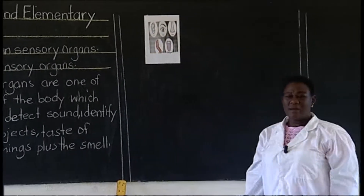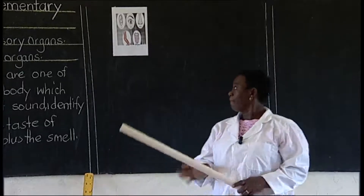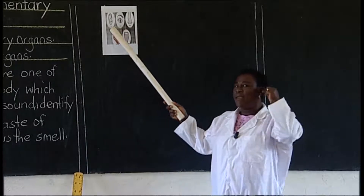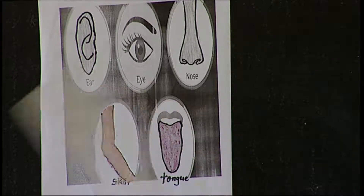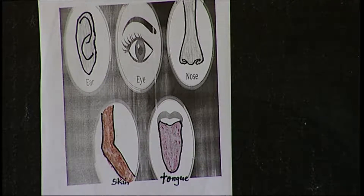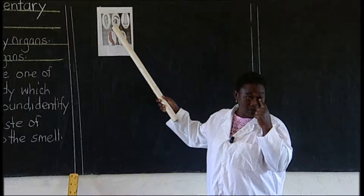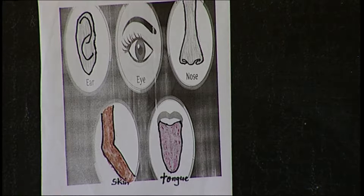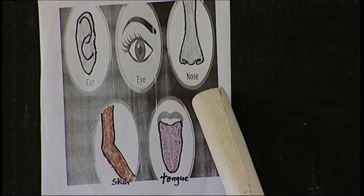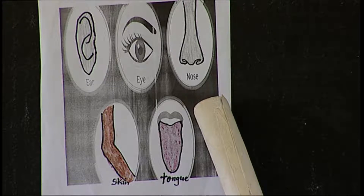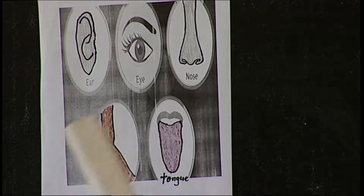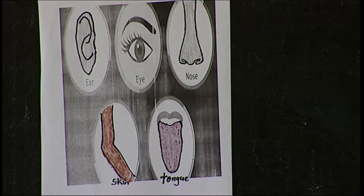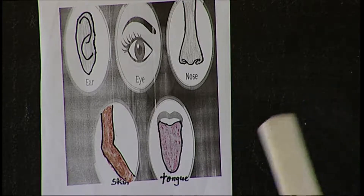Sensory organs are one of the body parts. We have the ear — if it is one, it is 'ear'; when there are two, they are 'ears'. We have the eye — when it's one, it is 'eye'; when there are two, they are 'eyes'. We have the nose. We have the skin. Then we have the tongue. These are the sensory organs.